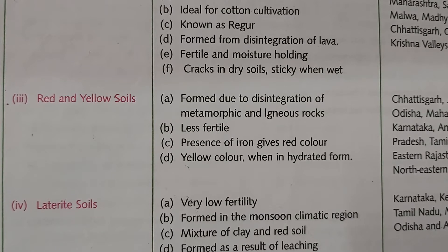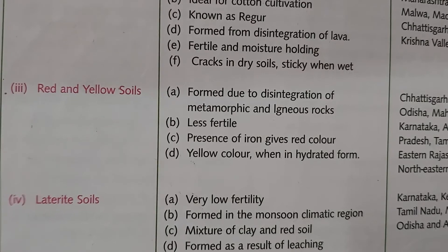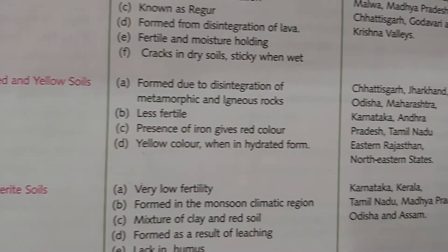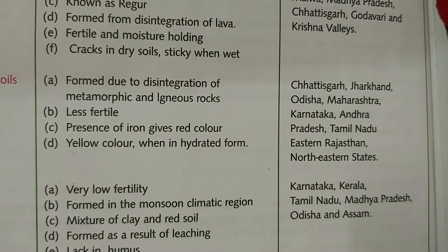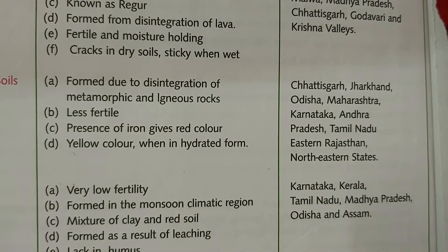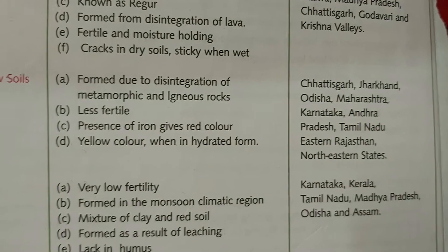When iron is in hydrated form — when moisture is present — the soil appears yellow in color. The areas where red and yellow soil is found include Chhattisgarh, Jharkhand, Odisha, Maharashtra, Karnataka, Andhra Pradesh, Tamil Nadu, Eastern Rajasthan, and the northeastern states of India.